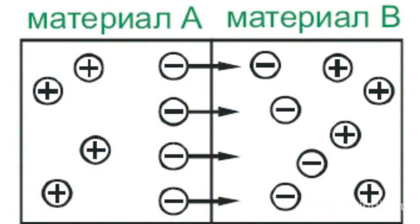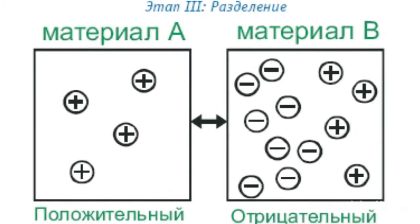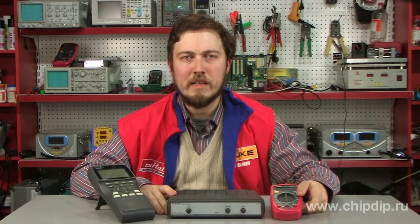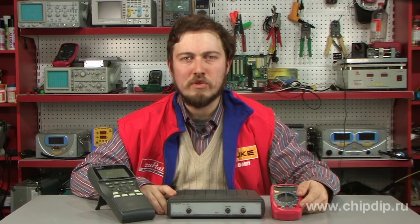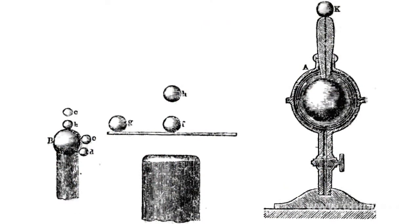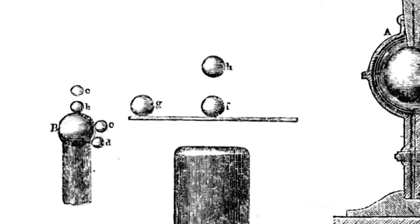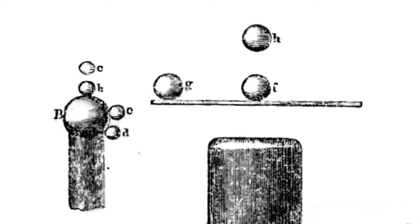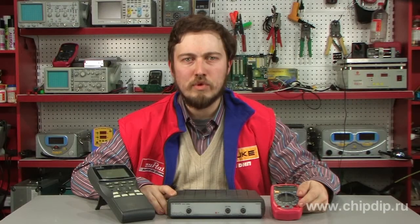Triboelectricity in solids is explained by the transition of current carriers under friction from one body to another. When there are two metals, two semiconductors, or a metal and semiconductor, triboelectricity is due to a transition of electrons from a substance with a lower work function to a substance with a higher one — this is the contact potential difference. When a metal and an insulator come in contact, triboelectricity arises due to a transfer of electrons from the metal to the insulator and a transfer of ions in the other direction from the insulator to the metal surface. When there is friction between two insulators, triboelectricity is determined by the diffusion of electrons and ions.